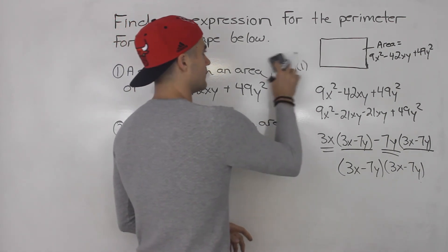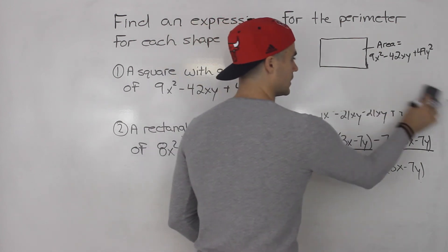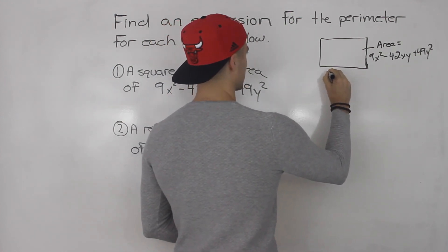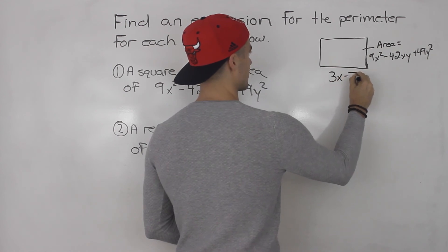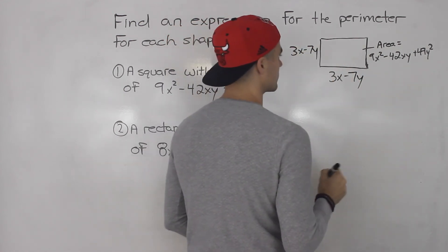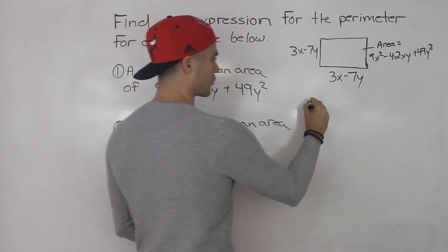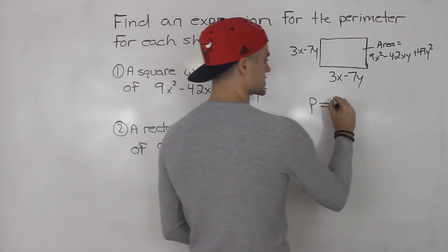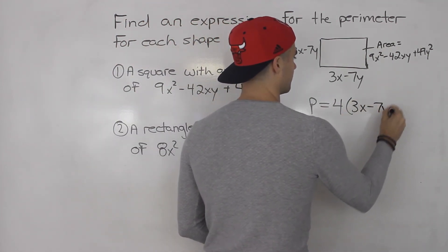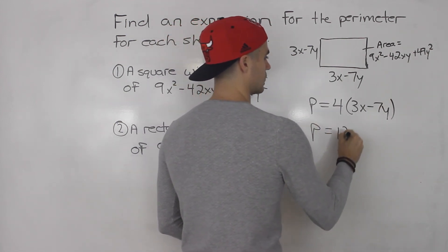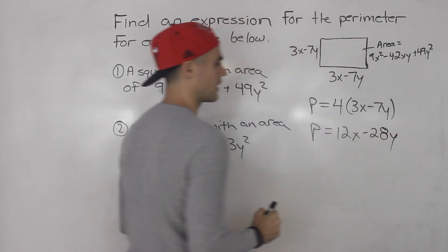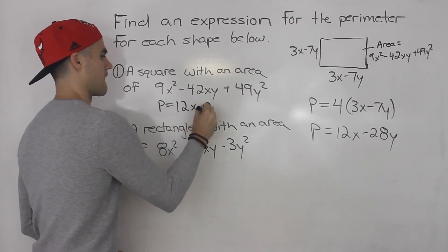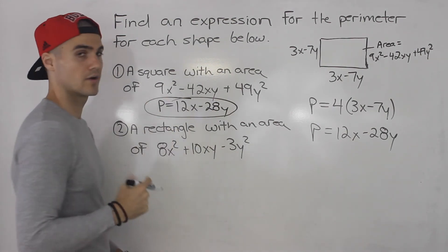From factoring we know that the side lengths are 3x minus 7y. To get the perimeter we add all four lengths — they're all 3x minus 7y — so we multiply by 4. The perimeter is 12x minus 28y. That is the expression for the perimeter for the first shape.